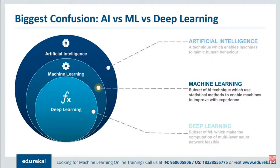Machine learning is a subset or current application of AI. It is based on the idea that we should be able to give machines access to data and let them learn by themselves. It's a subset of artificial intelligence that deals with the extraction of patterns from data sets. This means the machine can not only find the rules for optimal behavior but also adapt to changes in the world. Many of the algorithms involved have been known for decades — centuries even — and thanks to advances in computer science and parallel computing, they can now scale up to massive data volumes.